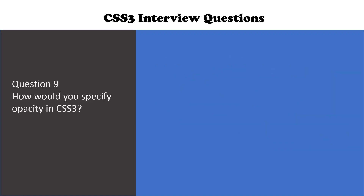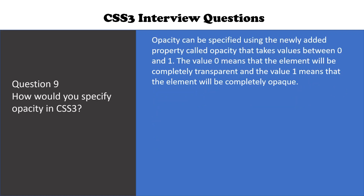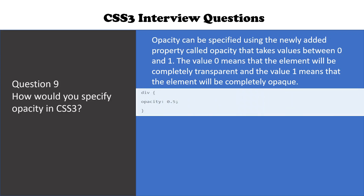The next question is: how would you specify opacity in CSS3? Opacity can be specified using the newly added property called opacity, that takes a value between 0 and 1. The value 0 means the element will be completely transparent, and the value 1 means the element will be completely opaque. This is the syntax of opacity — we have a div and give it an opacity of 0.5, which is a value between 0 and 1.